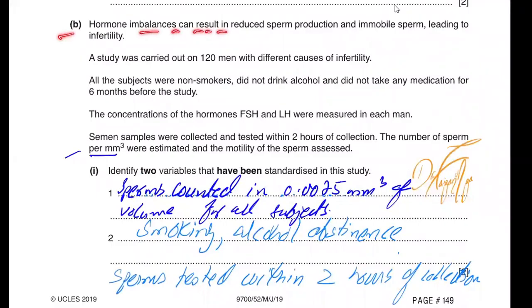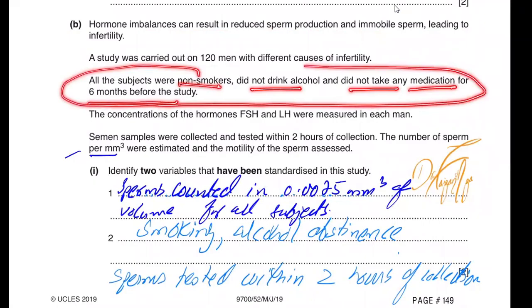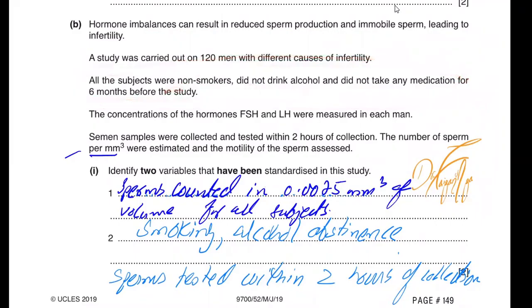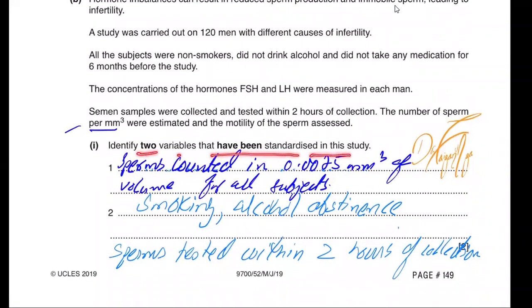Part B: Hormone imbalance can result in reduced sperm production and immobile sperm leading to infertility. A study was carried out on 120 men with different causes of infertility. All subjects were non-smokers, did not drink, and did not take any medication for six months before the study. This is the exclusion or inclusion criteria - which subjects were included and excluded. These are the control variables. FSH and LH concentrations were measured in each man. Semen samples were collected and tested within two hours. The number of sperm per microliter were estimated and motility assessed.